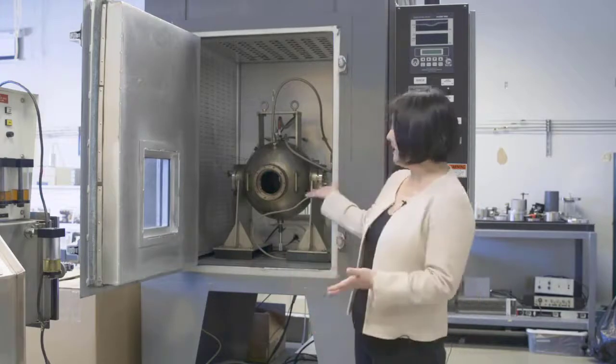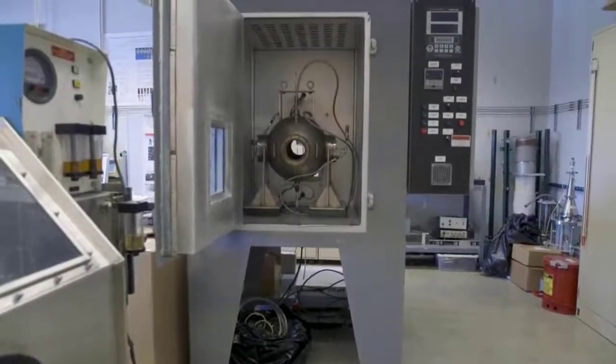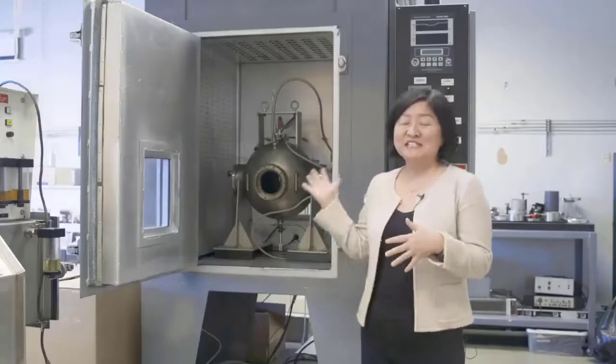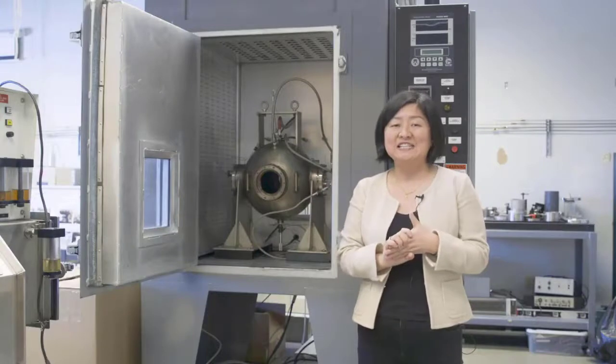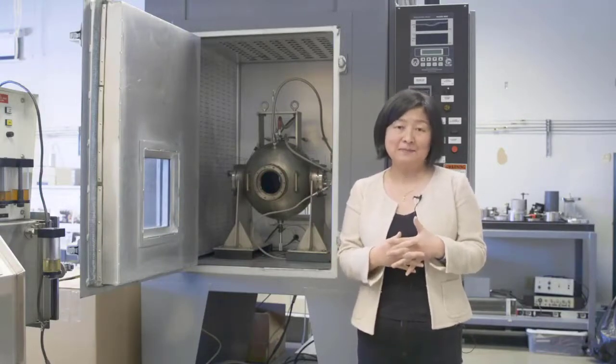So we have developed a setup over here. As you can see, we have a spherical combustion bomb in-house inside the oven. So we have used this facility to test various alternative fuels. And for example, we have measured flame speed of different fuels of varying temperature and pressures.